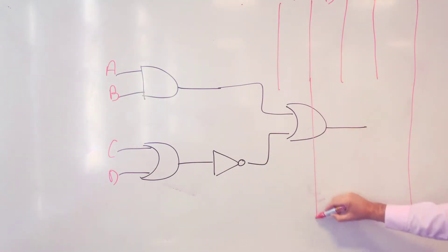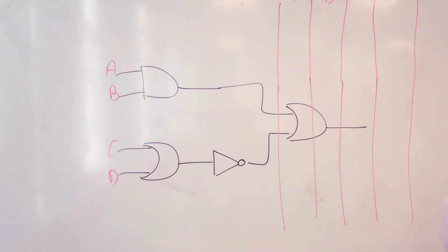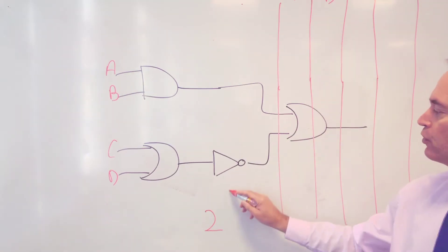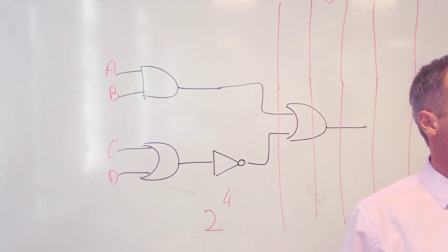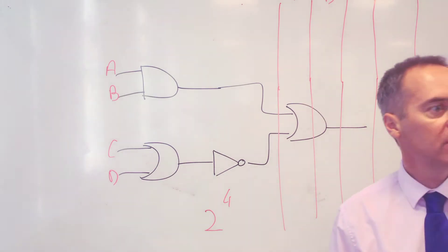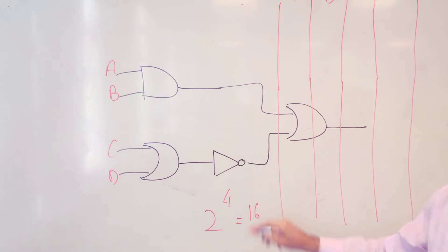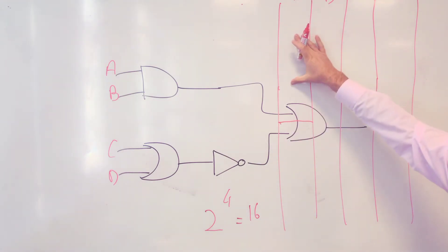The first problem we encounter is how to populate the inputs. If you've got four inputs, you will have two to the power four possible combinations of inputs. What is two to the power four? 16 — correct.